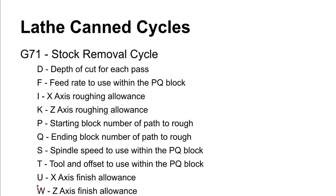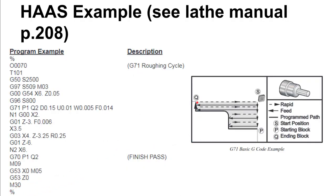U and W are finish allowances. U is the X-axis finish allowance — the allowance on the diameter — and W is the finish allowance along the Z-axis. A positive value for U and W leaves a little extra material on the outside of the part and on the faces. This is because G71 is a roughing sequence; you leave material behind so a subsequent finishing pass has something to remove.